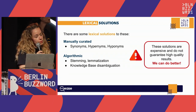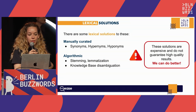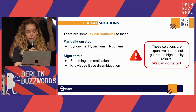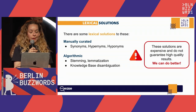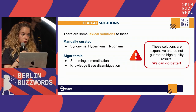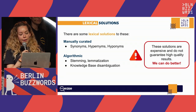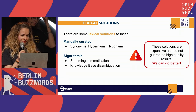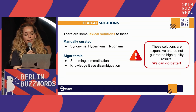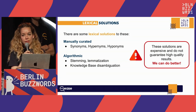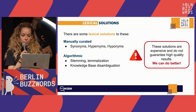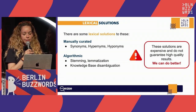There are some lexical solutions that can be used for solving these problems. Some are manually curated — lists of synonyms, hypernyms, and hyponyms — so we can make the search engine aware of similar terms. Others are algorithmic, like stemming, lemmatization, or the use of a knowledge base for disambiguation. The key thing to keep in mind is that these solutions are expensive both to develop initially and to maintain over time. They are usually implemented for specific problems, but can sometimes create issues in other contexts and scenarios, requiring detailed, clear implementation and study.